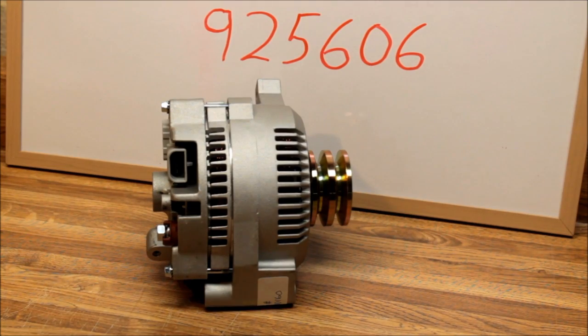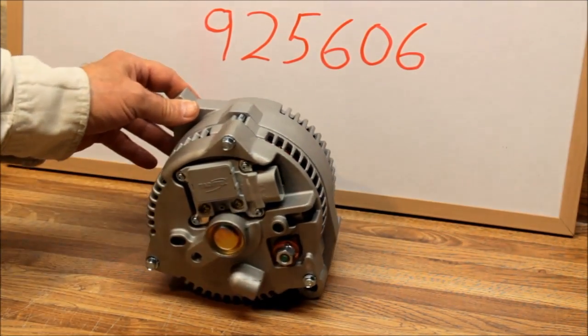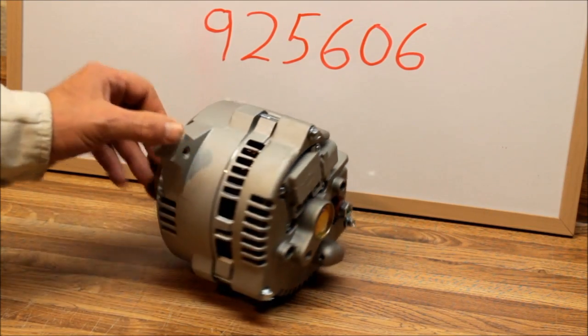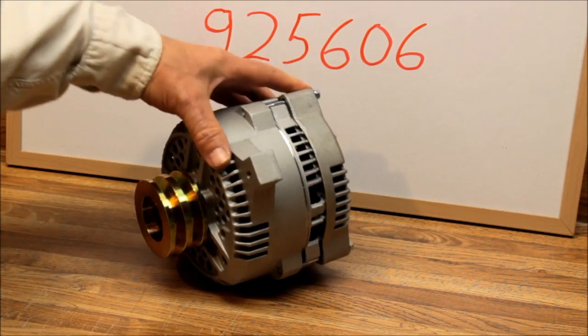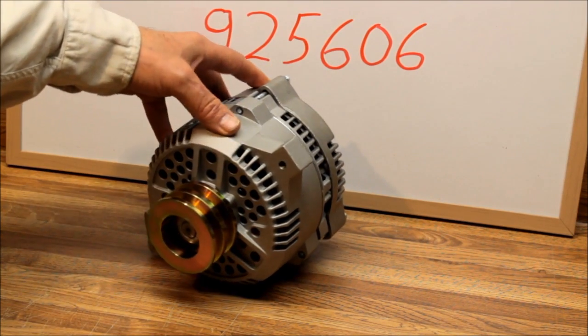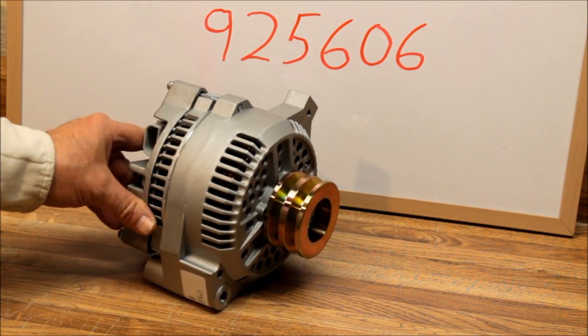Alternator man here. I want to show you a brand new 3G series alternator. This is a 200 amp unit. This is going to replace the 1G series externally regulated alternator on an '89 Ford truck with a diesel in it.